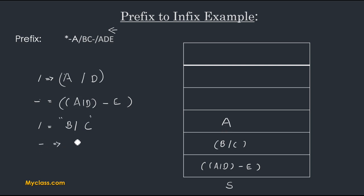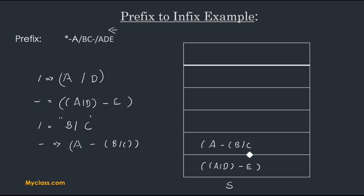Now another operand arrives — A — and we push it into our stack. Then a subtraction operator arrives, so we pop A and 'B / C', making a string like 'A - (B / C)'. We pop both elements and push this new combined string back into our stack. Now there is only one more item to scan.